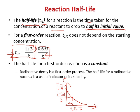For a first-order reaction, the half-life is a constant. Radioactive decay is one example of a first-order reaction. The half-life for a radioactive nucleus is a very useful indicator of its stability. If an element's radioactive decay half-life is very long — for example, 10 million years — that means it's a stable element. On the other hand, if another element has a half-life of only 10 seconds, that element is very unstable.